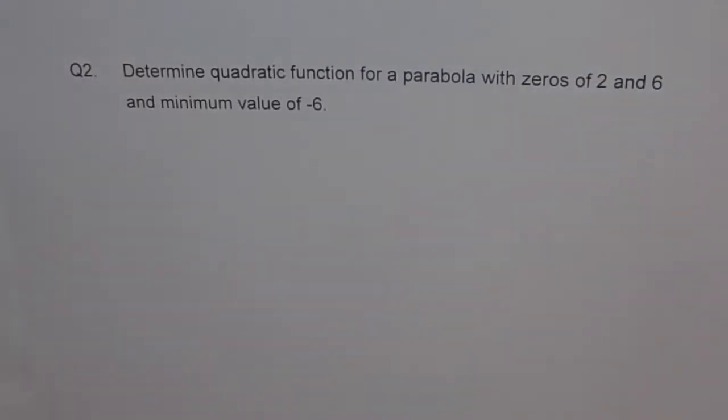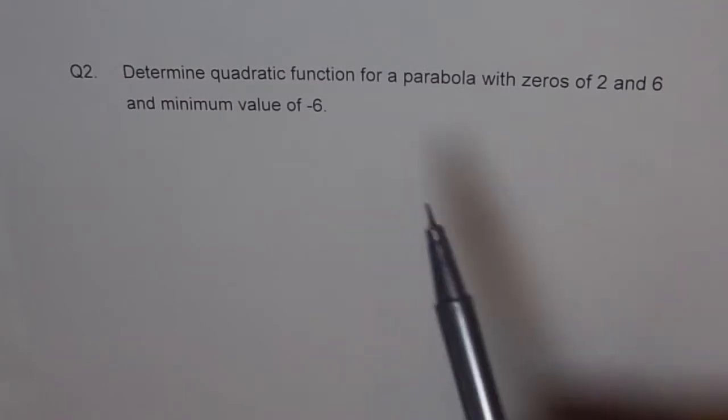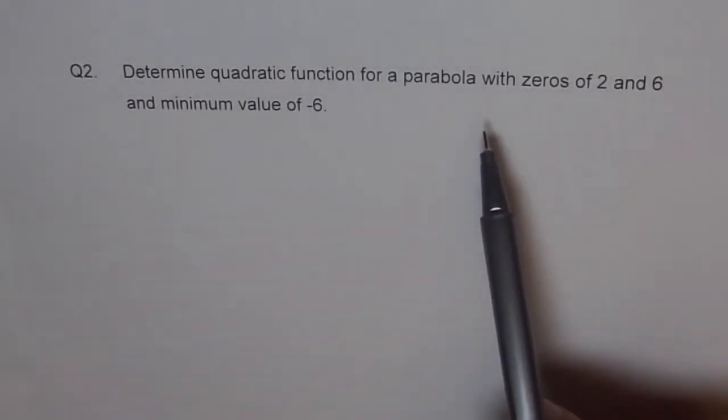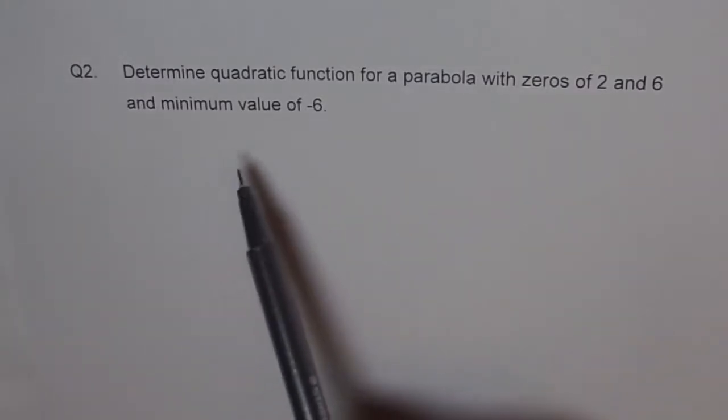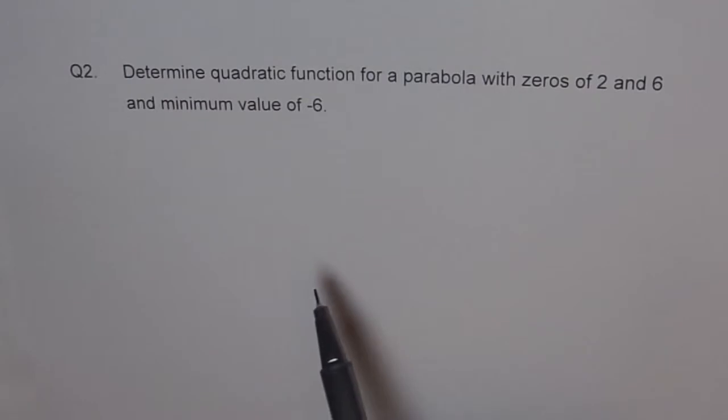Hello, here is another equation to find the quadratic function for a parabola with given conditions. The given conditions are zeros of 2 and 6 and a minimum value of minus 6. That's the given condition.